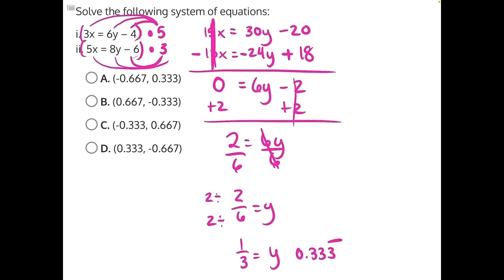And that only matches answer choice A. It is the only one that has a positive 0.333 as its y value, and so that makes it our correct answer. At that point, you can mark it and move on with the rest of the test, but for the sake of the video, I'll show you how they found the x value as well.